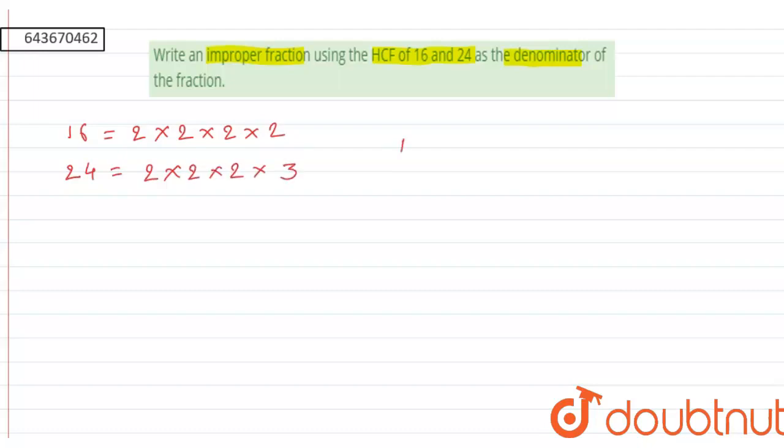HCF is the highest common factor of these two numbers. So here 2 is common, 2 is again common, and 2 is again common. So common factors are 2 into 2 into 2, that means HCF will be 8.